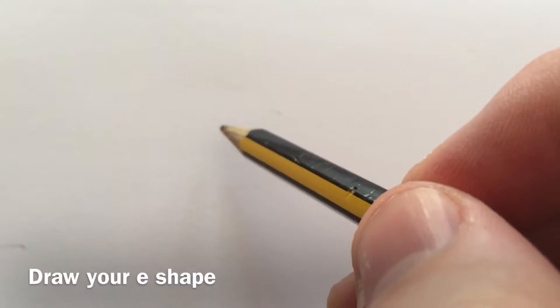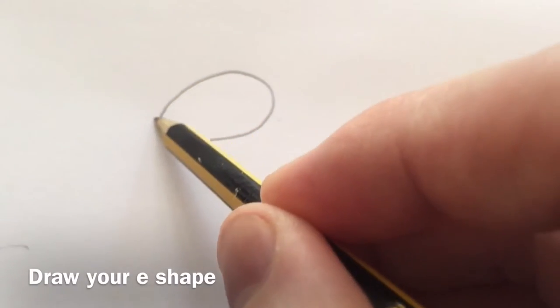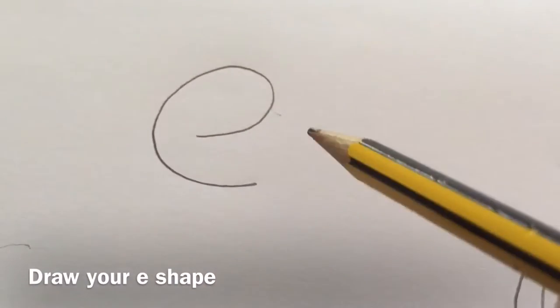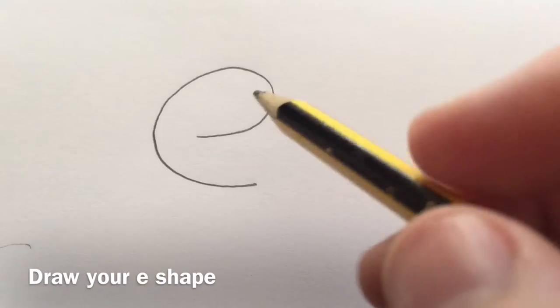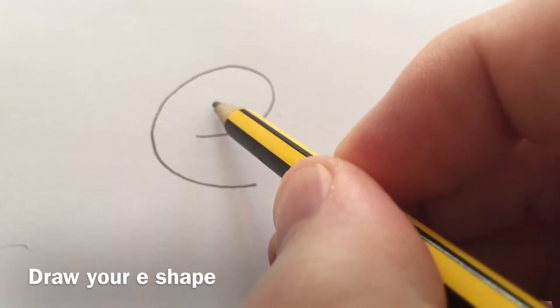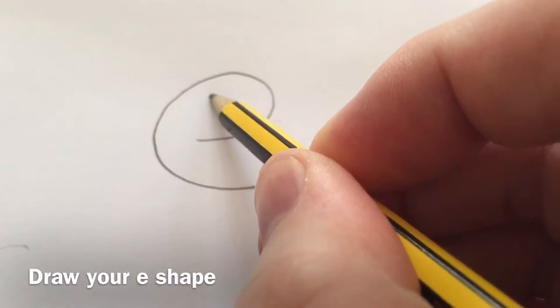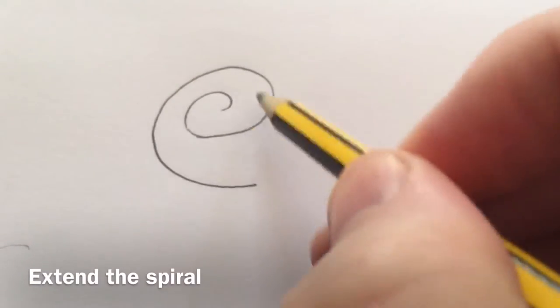Okay, so we're going to start with drawing ourselves just the basic E shape on our paper. And then what that should do is allow us to extend this central section here to create the central spiral. I'm almost drawing another E shape to connect it.